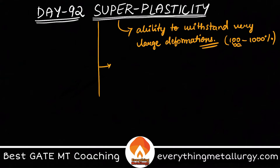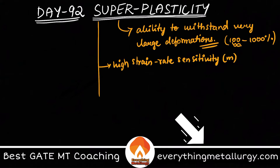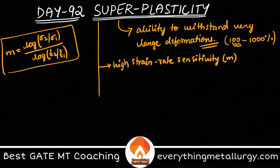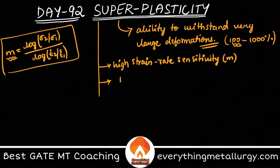Number one is very high strain rate sensitivity. We have strain rate sensitivity denoted as m, where m equals log of (sigma 2 / sigma 1) divided by log of (strain rate 2 / strain rate 1). We require a very good amount of strain rate sensitivity in order to help for superplastic nature, and definitely a higher temperature — usually greater than 0.5 times the melting point — so that more slip systems may be activated and more deformation may take place.